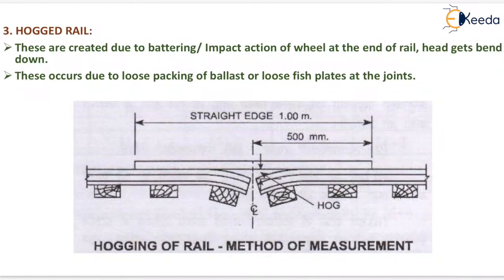Next is the hogged rail. These are created due to the battering impact action of wheels at the end of the rail — the head gets bent down. These occur due to loose packing of ballast or loose fish plates at the joints.